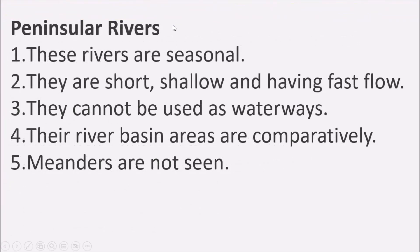Peninsular rivers: these rivers are seasonal. They are short, shallow, and have fast flow. They cannot be used as waterways. Their river basin areas are comparatively small. Meanders are not seen in Peninsular rivers.